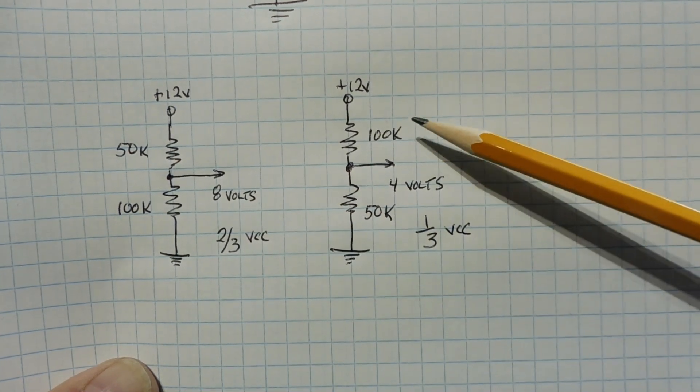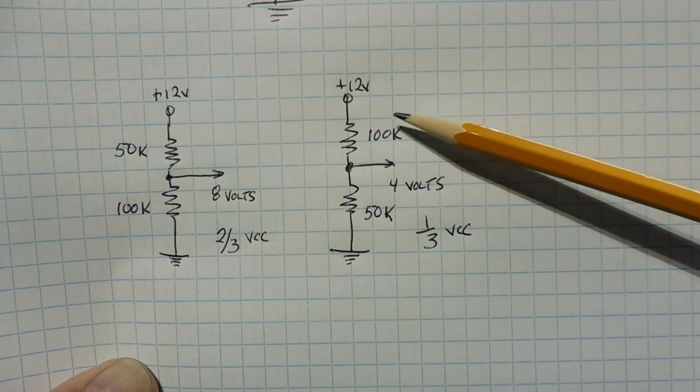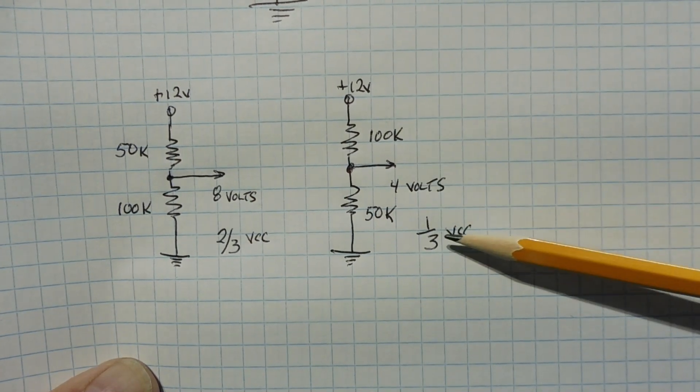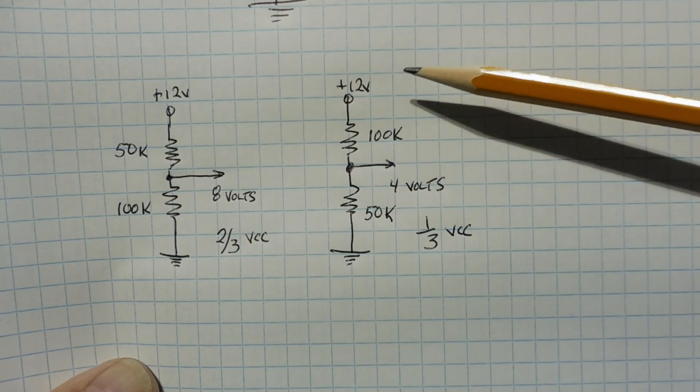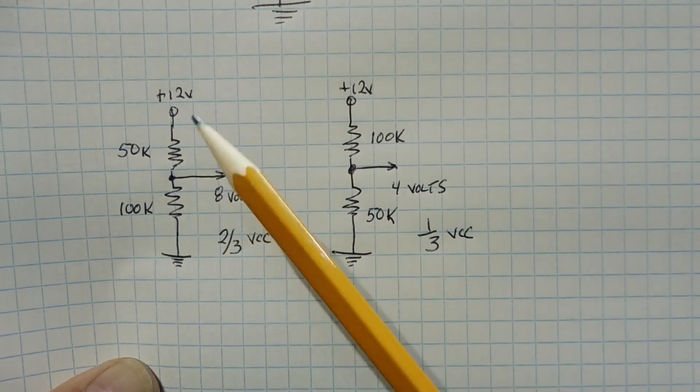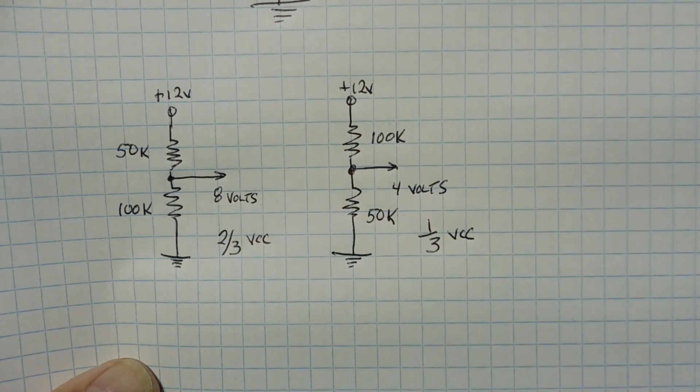And then when the output goes low, we'll have 100k on the top and 50k on the bottom, which will give us four volts. That's one-third VCC. And that's the trip point for when the capacitor is discharging. So that's how we get our oscillation between these two trip points of 8 volts and 4 volts.